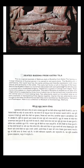बैठे हुए बुद्धा कट्रादिला — कुशान काल की कट्रादिला से प्राप्त भगवान बुद्ध की यह बैठी प्रतिमा मथुरा शैली में बनी है। इस पर विदेशी शैली का कोई भी प्रभाव नहीं है। यह लाल रंग के बलुआ पत्थर को काट कर बनाई गई है। यह मूर्ति पद्मासन में बैठी हुई, अपने गोल चेहरे पर मुस्कान और मित्रता का भाव लिए, आंतरिक सुख व आध्यात्मिक भाव से ओतप्रोत है।